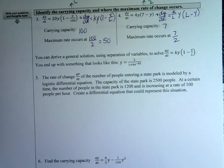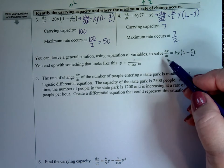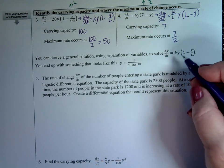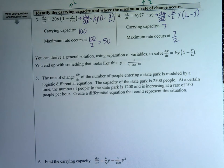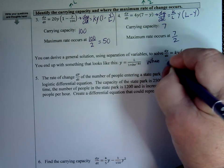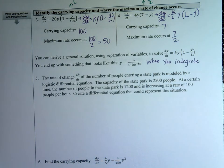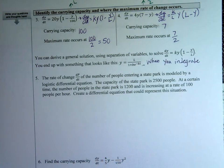You can derive a general solution by using separation of variables to integrate the differential equation. Given dy/dt — that's the first derivative, the differential equation — you can integrate backwards to find what y equals. That gives you the original logistic function equation.